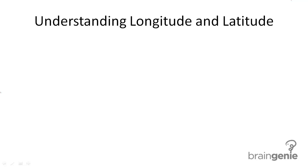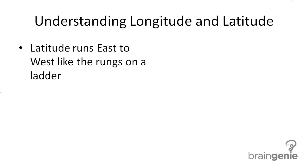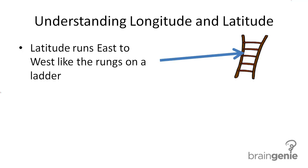Longitude and latitude are imaginary lines that are used to help find specific points on a globe or a map. Latitude runs east to west like the rungs on a ladder. So the latitude lines on your map are going to go this way, like the rungs.